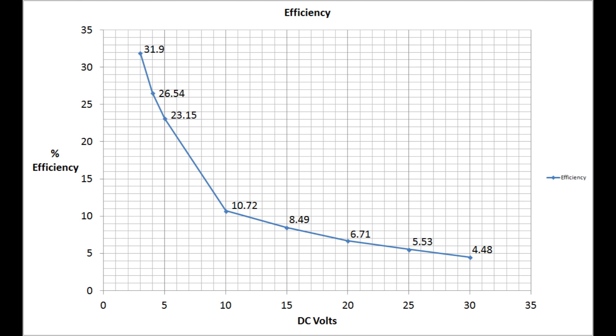This gives a pretty clear indication that as the cell voltage is reduced, or the voltage applied to the cell is reduced, so the efficiency increases. And the difference between the 3 volt figure and the 30 volt figure is at a factor of 7, so it's over 7 times more efficient to work at 3 volts than it is to work at 30 volts.